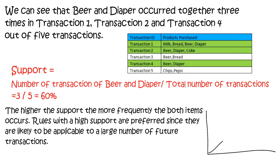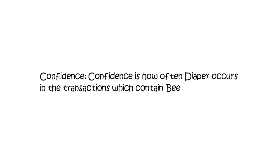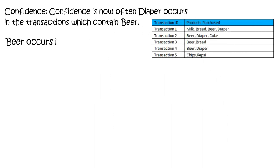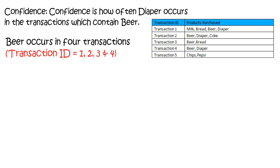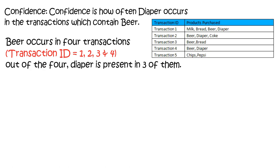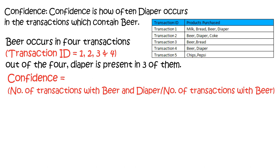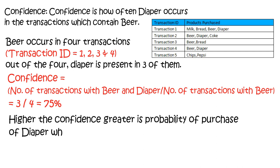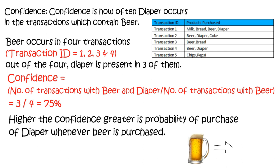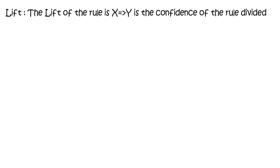Confidence is how often diaper occurs in transactions that contain beer. Beer occurs in four transactions — transactions 1, 2, 3, and 4 — and out of those four, diaper is present in three of them. Hence, confidence equals the number of transactions with beer and diaper divided by the number of transactions with beer, which equals 75%. The higher the confidence, the greater the probability of purchase of diaper whenever beer is purchased.